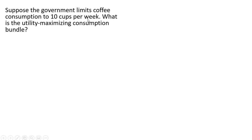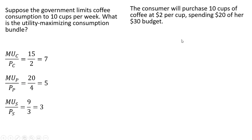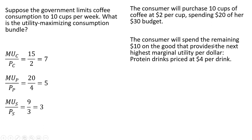Now suppose the government limits coffee consumption to 10 cups per week. What is the utility maximizing consumption bundle? Reminding ourselves of the marginal utilities per dollar for the three drinks, the consumer will purchase 10 cups of coffee at $2 per cup, spending $20 of her $30 budget.